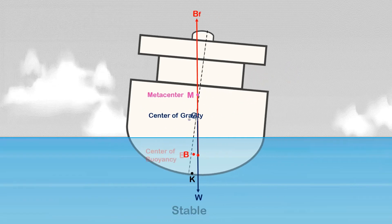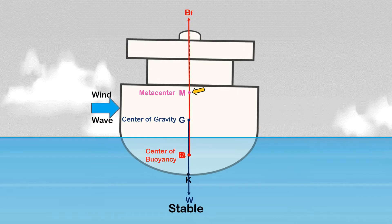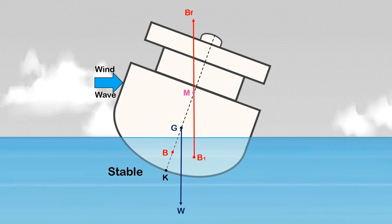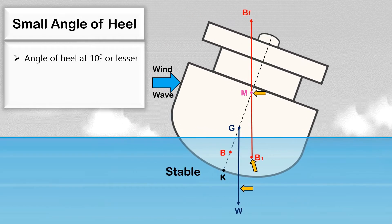For a stable ship, where the metacenter is above the ship's center of gravity, when she is heeled by external forces such as wind and waves, the ship's center of buoyancy will move to the low side, and the vertical upward force acts on the ship's center of gravity. At a small angle of heel, the metacenter M can be found directly above the ship's center of buoyancy, along the buoyancy force intersecting the ship's centerline. A small angle of heel is when the ship is tilted by external forces at 10 degrees or lesser — though some consider it 15 degrees or lesser.